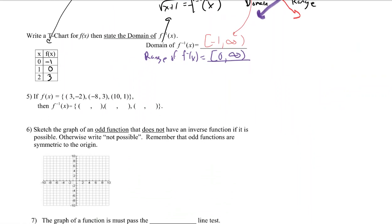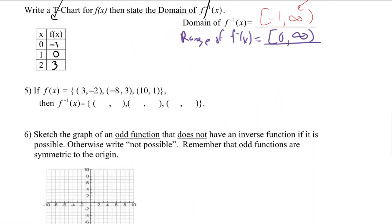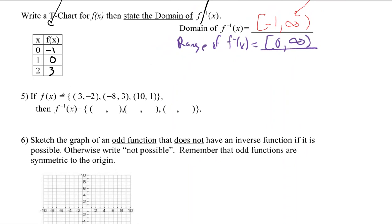Question five is similar to question one, just written differently. These are points of the function. Switch x and y to get a point on the inverse. Switch x and y, switch x and y. That's it.